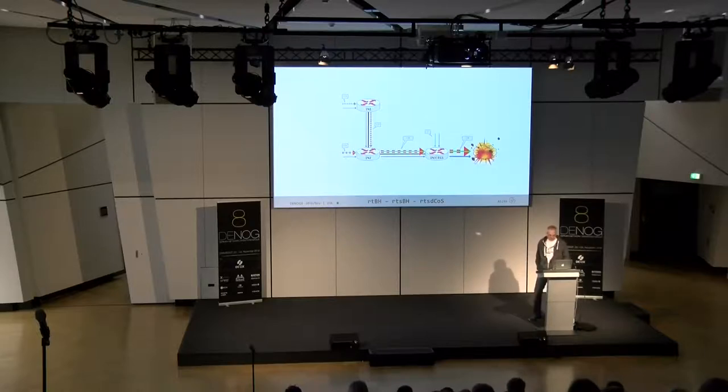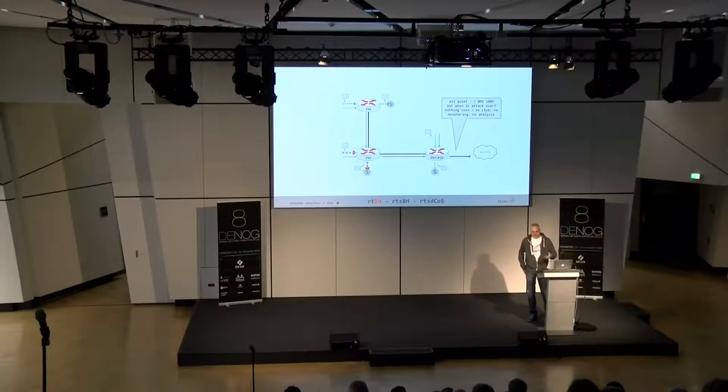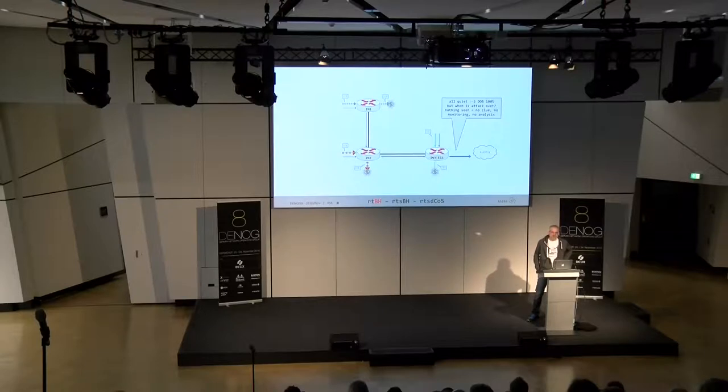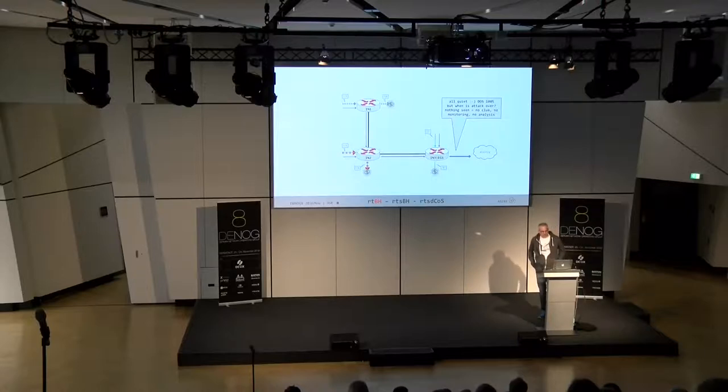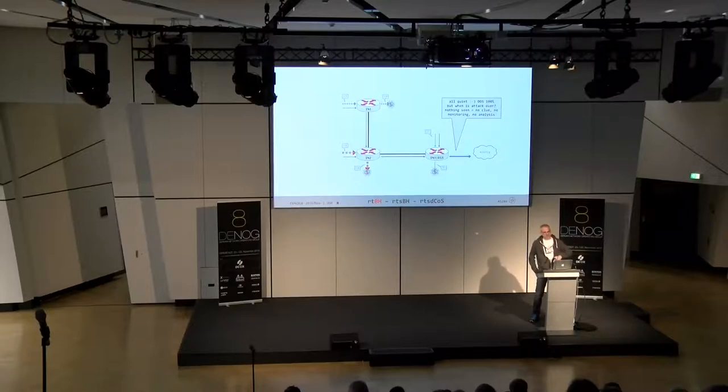So this is a problem. What you usually do then, and that's nothing new, nothing fancy, it's blackhole. You tell me to blackhole the traffic and I do then discard on all ingress boxes the traffic immediately rather than sending you. That's nice, that brings your network back, but you don't get any traffic for the green, neither the good, neither the bad one. And you have no clue when the attack is over because you don't get any traffic. So to see if the attack is over, you take the risk by removing the blackhole.